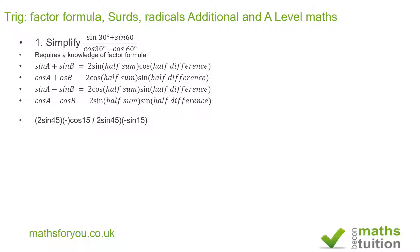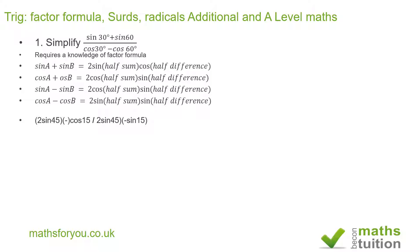For the denominator we use the appropriate factor formula. We again get the sum of 30 and 60 halved, which equals 45 degrees. And 30 minus 60 gives minus 30, halved gives minus 15.